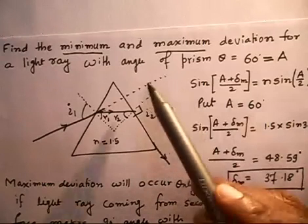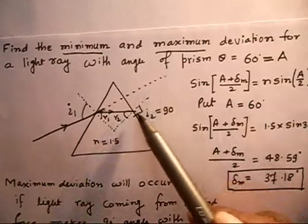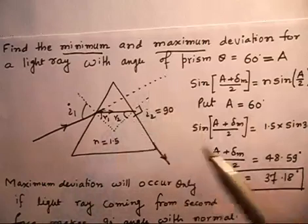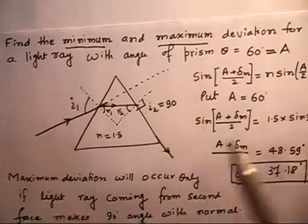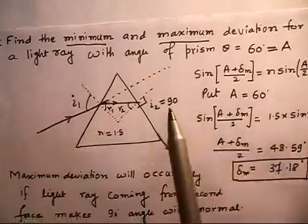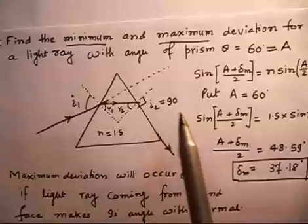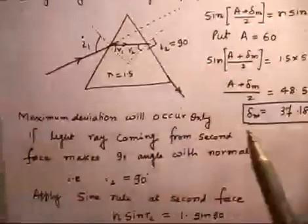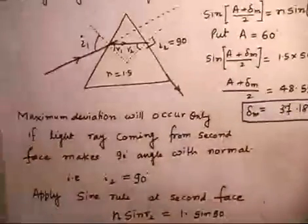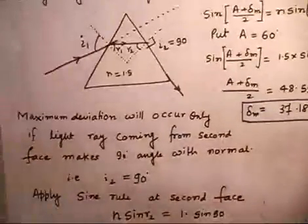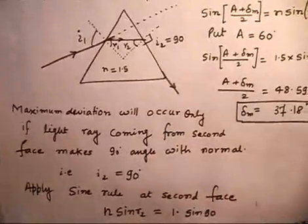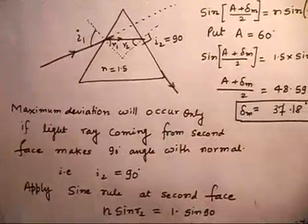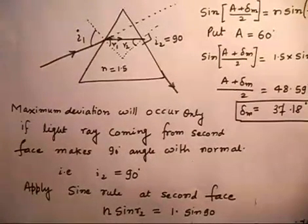This deflection angle will be maximum only if the refraction angle at the second surface becomes 90 degrees, that is I2 becomes 90 degrees. Maximum deviation occurs only if the light ray coming from the second face makes a 90-degree angle with the normal, that is I2 equals 90 degrees.